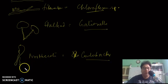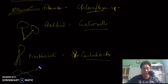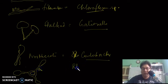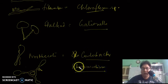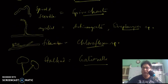Another type does not form stalks but has elongations of the cell proper called prosthecae, and these are called prosthecate bacteria. Prosthecae contain protoplasm inside. An example is Rhodomicrobium, which forms prosthecae and may form a spore in the middle when it divides.